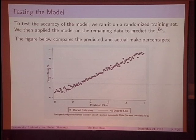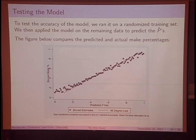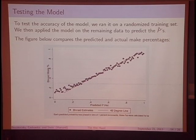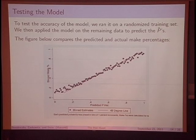To validate the model, we randomly split the data in half, ran the model on one half to get coefficients, then applied it to the second half. With predicted probability on the x-axis and actual make percentage on the y-axis, a perfect model would fall on a 45-degree line — and the data almost does. We feel pretty good about this model as an accurate predictor of shot difficulty.